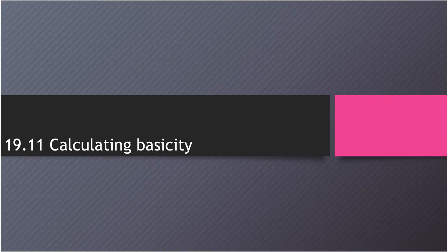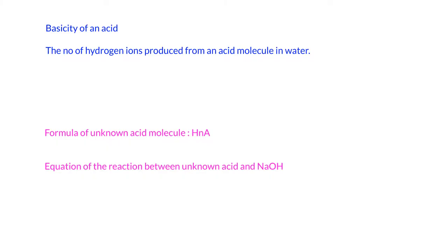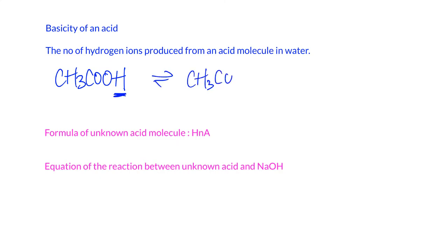In this video we're going to talk about how to find the basicity of an acid. The basicity of an acid equals the number of hydrogen ions produced from an acid molecule in water. For example, in ethanoic acid, even though we have four hydrogens, only one can be ionized to form hydrogen ions in water. So the basicity of this one is 1, and we also call this monobasic.